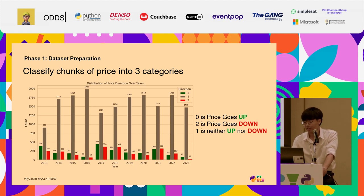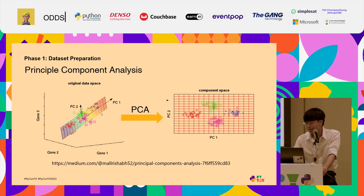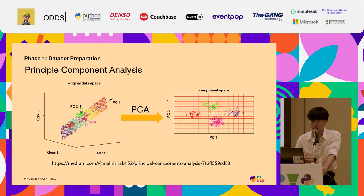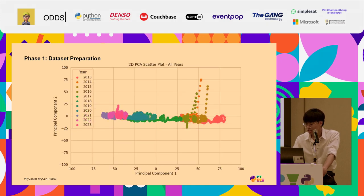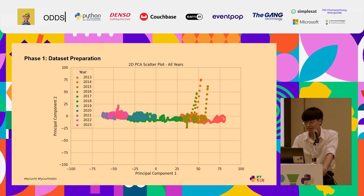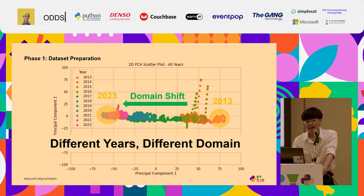This figure shows the distribution of the dataset across different years. After preparing the data, we also apply Principal Component Analysis to explore its characteristics. PCA is a tool that simplifies complex, high-dimensional data to enhance visibility and visualization. I applied PCA to the dataset and found that this plot shows the outcome for each year, with each year represented by a different color. The 2013 data is on the right, and 2023 is on the far left. Do you notice any pattern here?